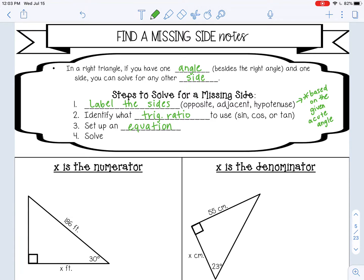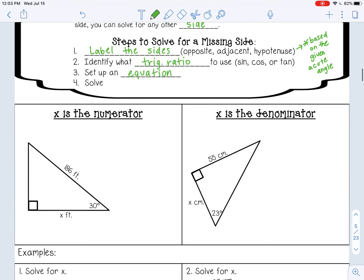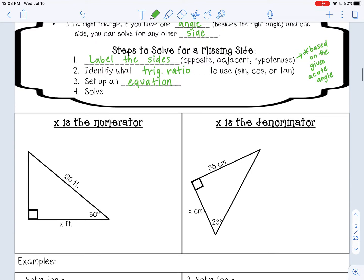Let's look at some examples. In this first example, when we set up our equation, our missing side x is going to be in the numerator. Let's follow our steps first. Let's label our sides. I would find the hypotenuse first - remember, it's always across from the right angle. That would be 186.